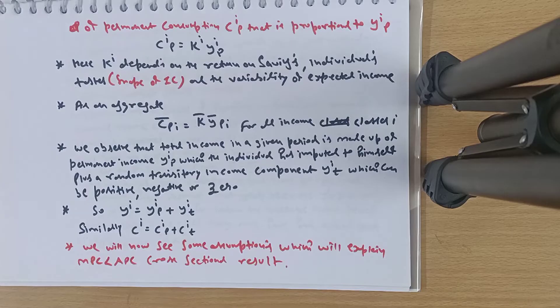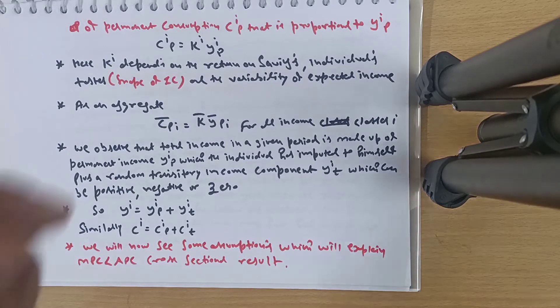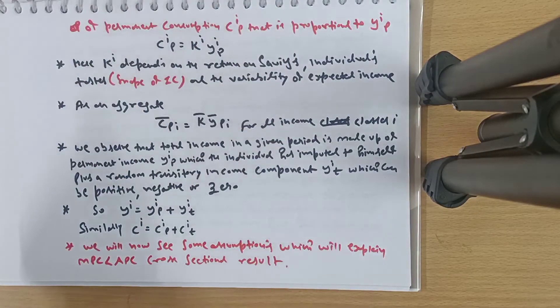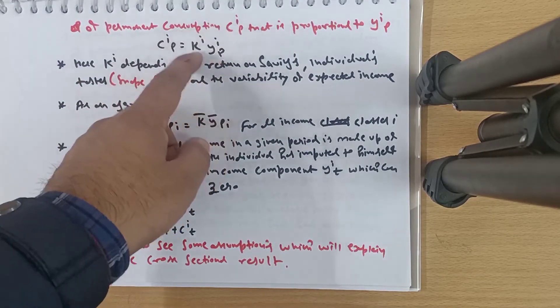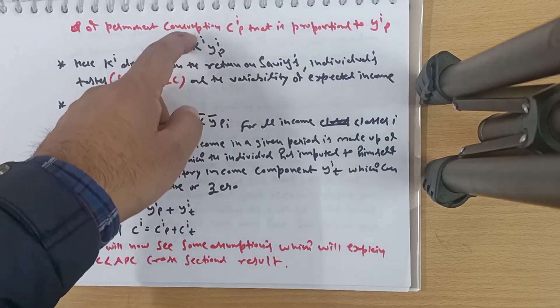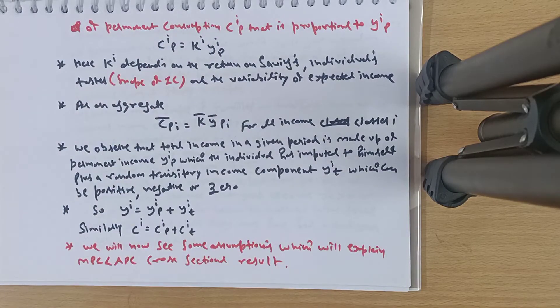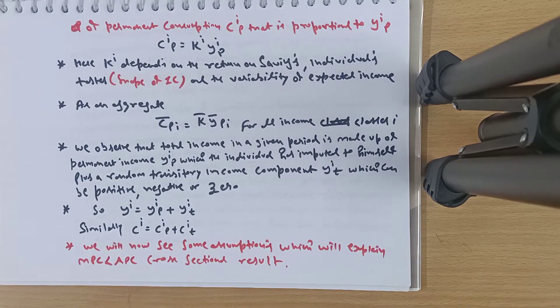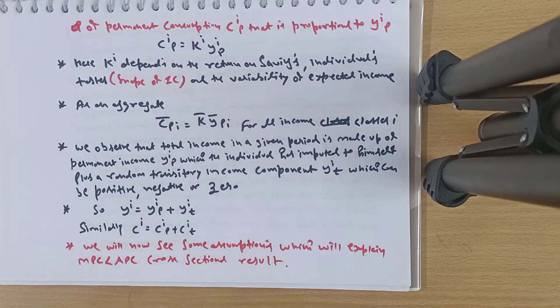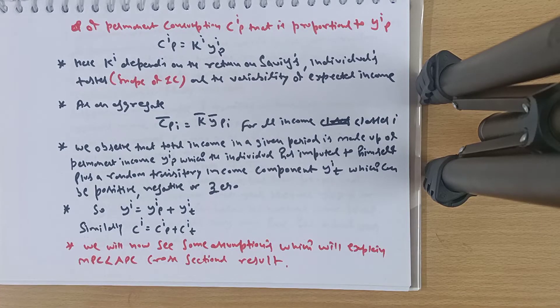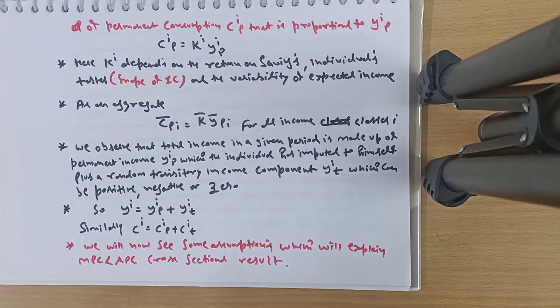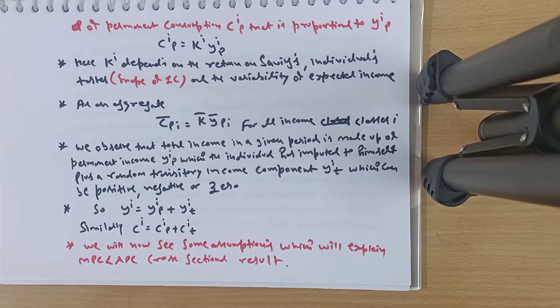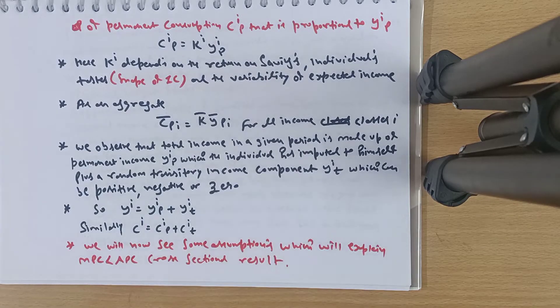He wants to have a permanent consumption, an average consumption which he wants to enjoy for the rest of his life. So that permanent consumption is given as Cip = ki × Yip, where i is an income class, a representative income class. So Cp, consumption, depends upon your permanent income and the k coefficient. Suppose permanent income is 10,000 and your k is 0.8, so your permanent consumption out of permanent income is going to be 8,000.